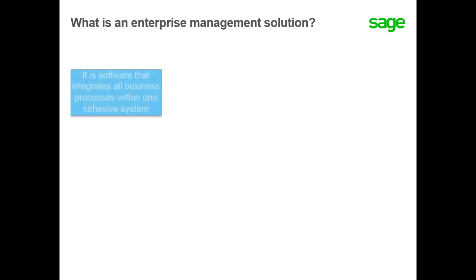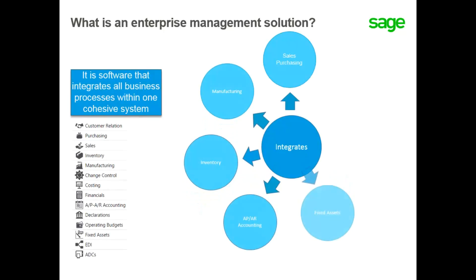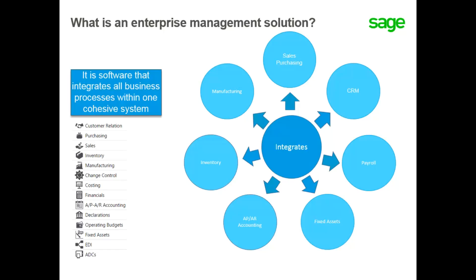What is an enterprise management solution? It's software that integrates all business processes within one system. Almost all businesses are managed with software that run business processes such as sales, purchasing, manufacturing, inventory, accounting, fixed assets, payroll, and the CRM module, which have greater efficiency when using enterprise management software. This is because all business functions and operations are managed and streamlined across a single integrated system.